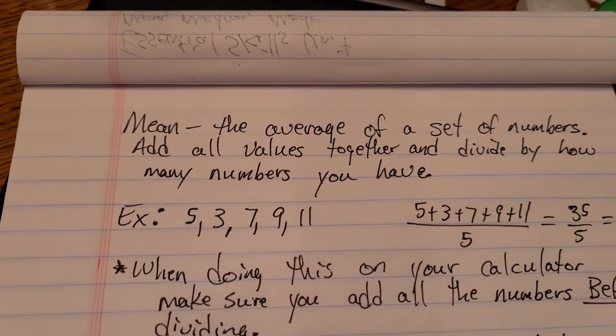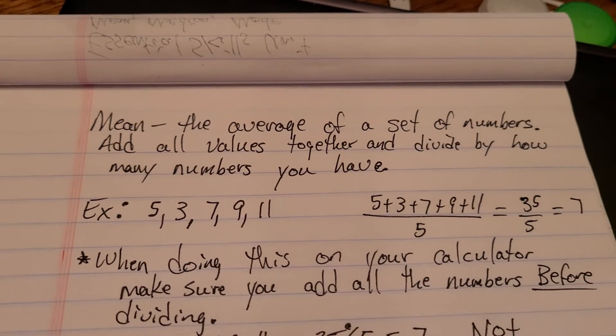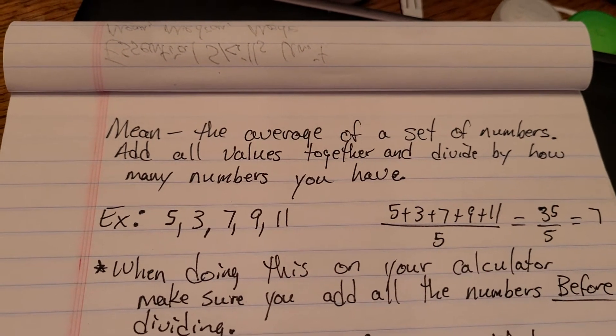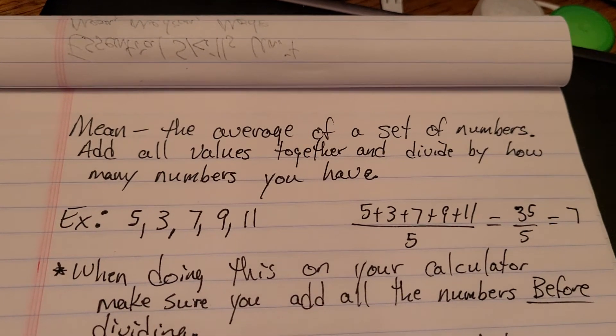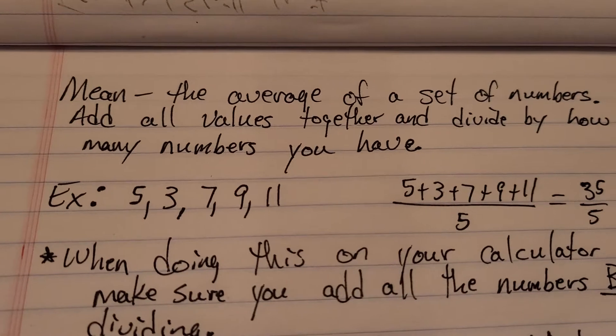So the first thing is the mean is the average of a set of numbers. And the way you find that is you add all the values together and divide by how many numbers you have. So here's the basic example you learned in like elementary school, middle school.